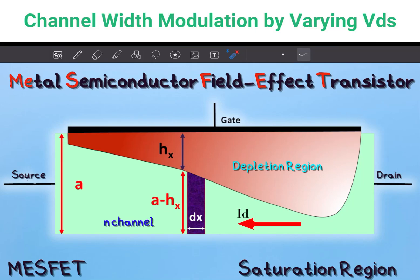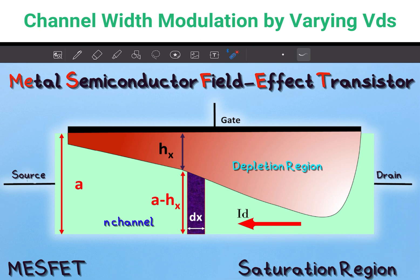In the previous video, I explained the metal-semiconductor contact and wrote the current equation for the linear region of the MESFET. Today we will derive the current equation for the MESFET in the saturation region.